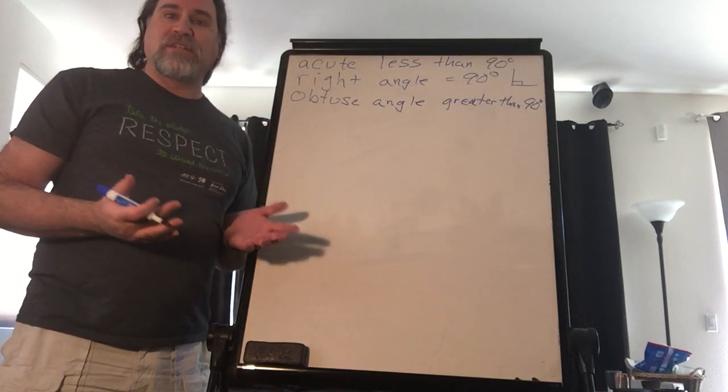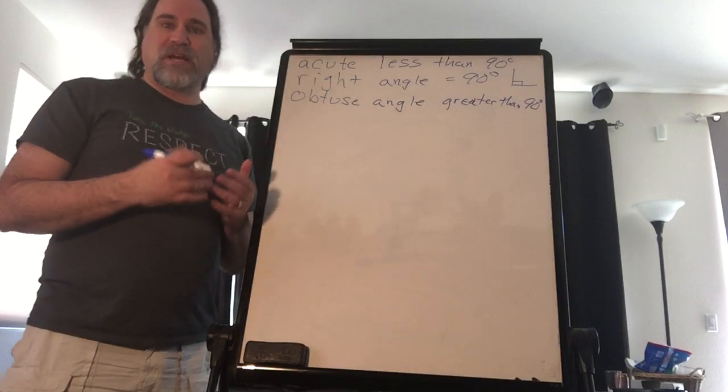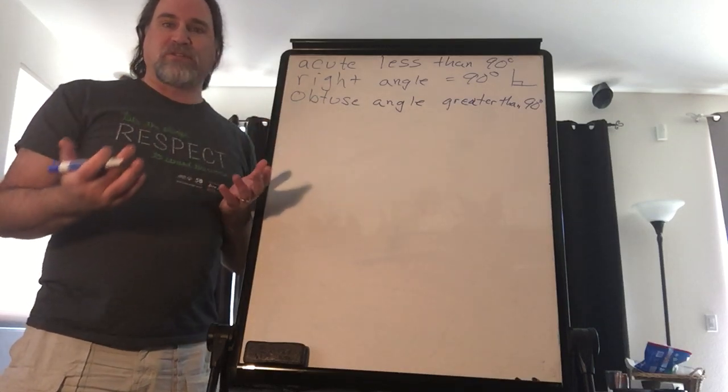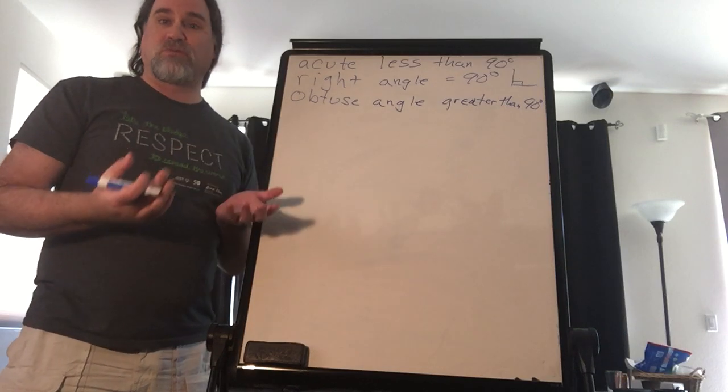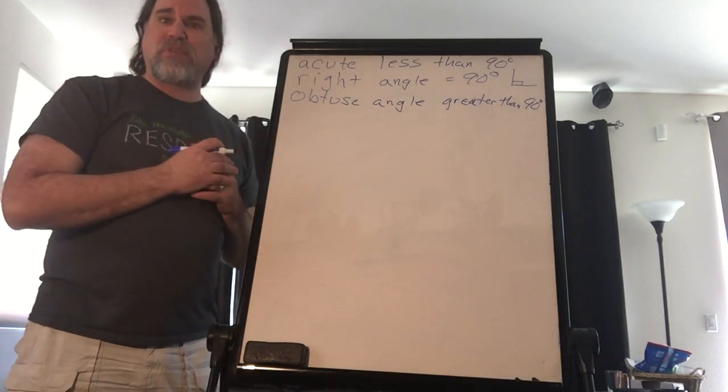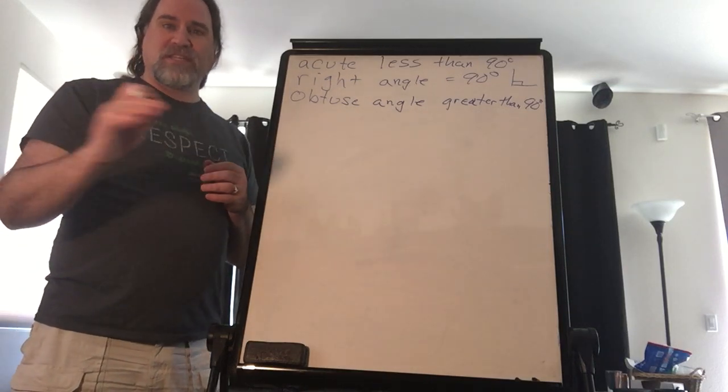Just a warm up so that you understand the vocabulary. When I say this is an acute something, you know that means that the angle is less than 90 degrees. If I tell you it's a right, we did a lot of work with right triangles. That's that Pythagorean theorem.